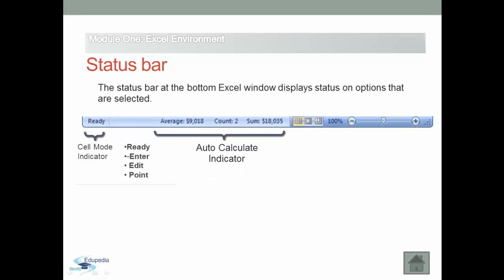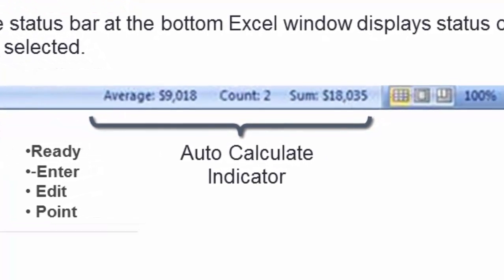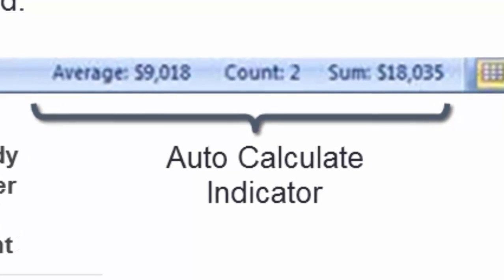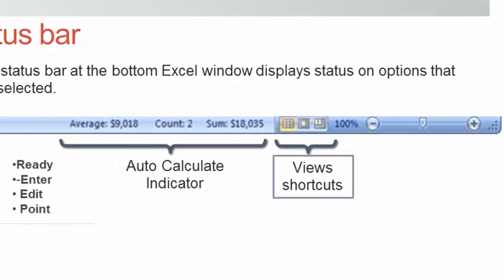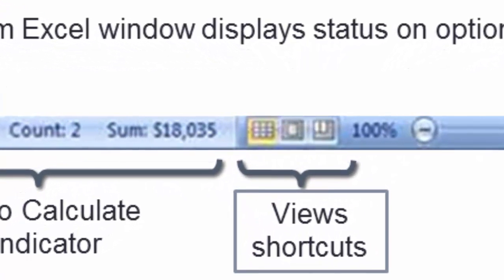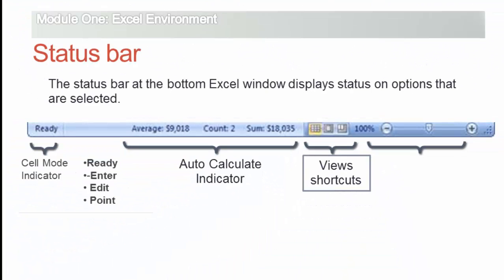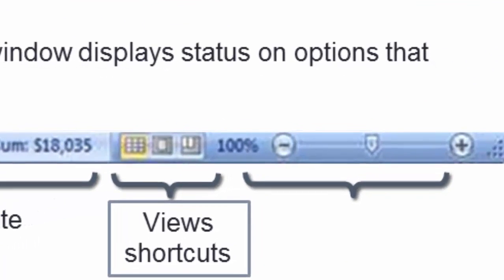The second area is the auto-calculate indicator, which displays the average and sum of all numerical entries in the current selection, along with the count of every cell in the selection. The third area is the view shortcuts or layout selector that enables you to select between three layouts for the worksheet area. The last area is the zoom slider that enables you to zoom in and zoom out on the cells in the worksheet by dragging the slider to the right or left respectively.